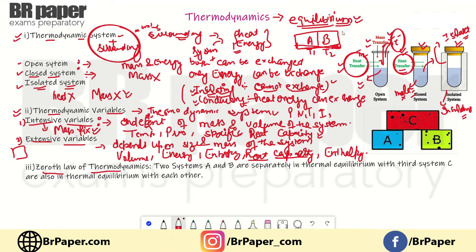When system A transfers energy to system B, there will come a point where both reach a common temperature T3. When both systems reach the same temperature T3, that state is called thermal equilibrium. When two bodies are at the same temperature, they are said to be in thermal equilibrium with each other.